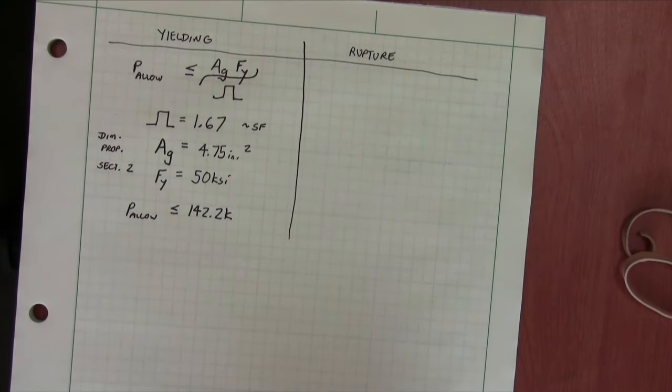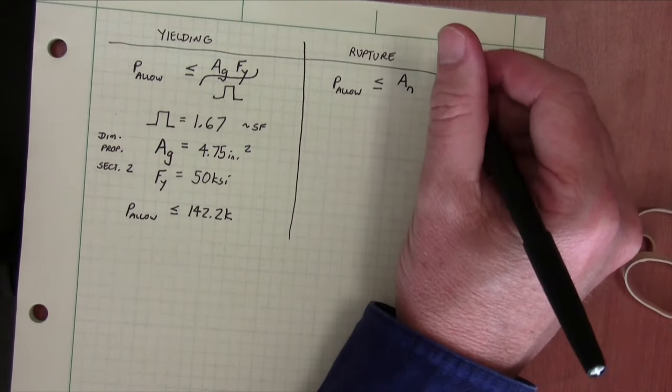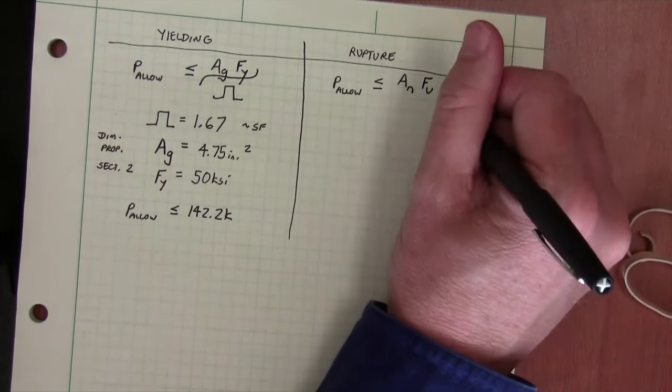So if we do that math, we find that the allowable load is 142.2 kips, which is a very large load, almost just over 70 tons, which is a tremendous steel tensile value, and which shows you that a little bit of steel can carry a lot of load.